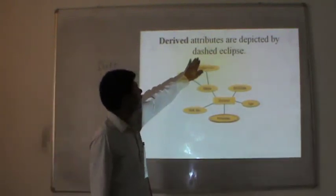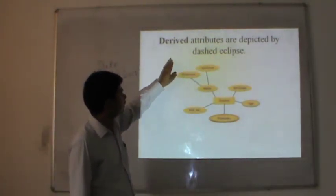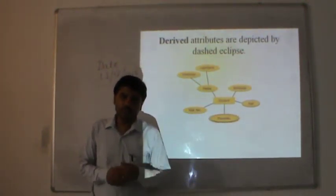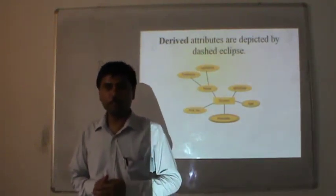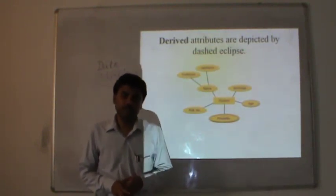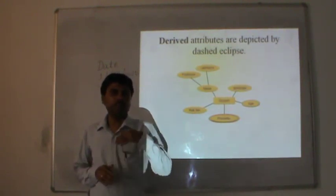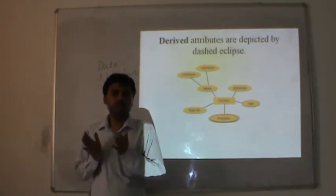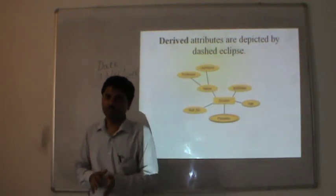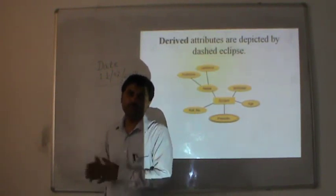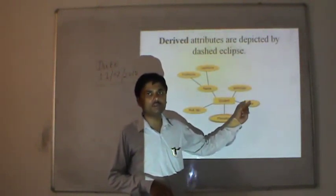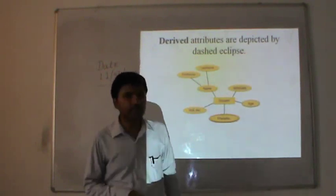Derived attributes are depicted by a dashed ellipse. If you are deriving some value from a stored value — like I have stored my date of birth in my database, and today I want to find my age, I will subtract today's date from the stored date of birth. The difference will be the up-to-date age. If I compute the age after five years, it will again be the up-to-date age. This is the derived attribute, and the dashed ellipse is the way to represent derived attributes.